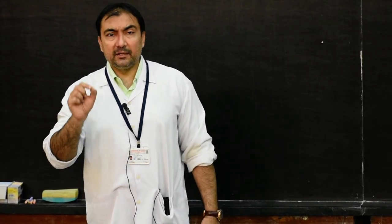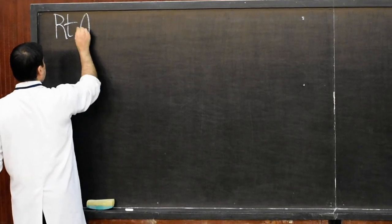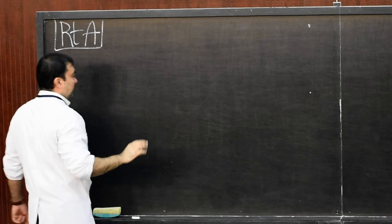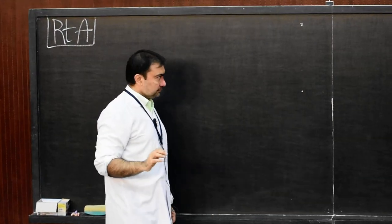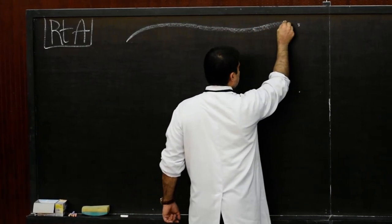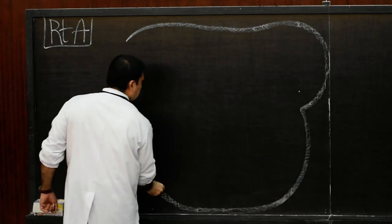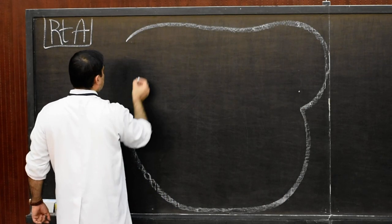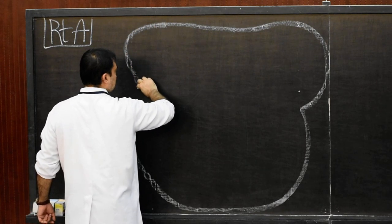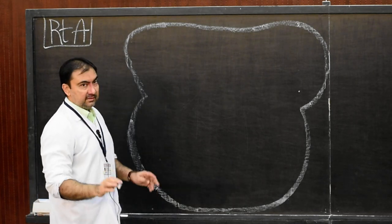A very interesting and important topic: development of the atrium. Our first topic is development of the right atrium. For this we will draw one diagram, which is a common diagram as I always refer to, where both atria as well as ventricles are seen. This is a generalized diagram.